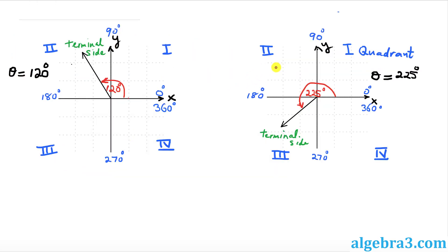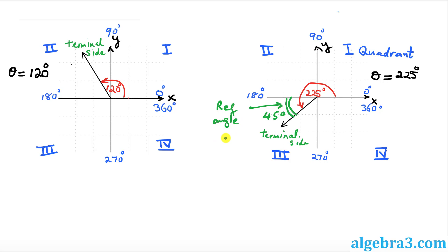Let's look at a couple more examples. On the right-hand side, the angle given to us is 225 degrees. As you can see, we are going counterclockwise, and this is our terminal line. The reference angle is always the nearest smallest angle between the x-axis and the terminal line. So this is our reference angle, and that turns out to be 225 take away 180, which is 45 degrees. And don't forget that this is in the third quadrant.